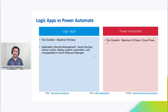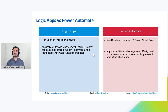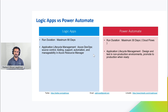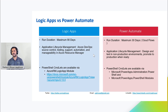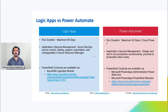When it comes to application lifecycle management, since Logic App is part of Azure, there's a really good story for integration with Azure DevOps, source control, and Azure Resource Management. We can design and test in non-production environments and promote to production when ready. The ALM story with Power Automate is a bit behind compared to Logic Apps, however it is getting improved day by day. For PowerShell commandlets, we have them available for Logic Apps as part of the Azure ARM LogicApp module. For Power Automate, there are two modules: Microsoft.PowerApps.Administration.PowerShell and Microsoft.PowerApps.PowerShell.